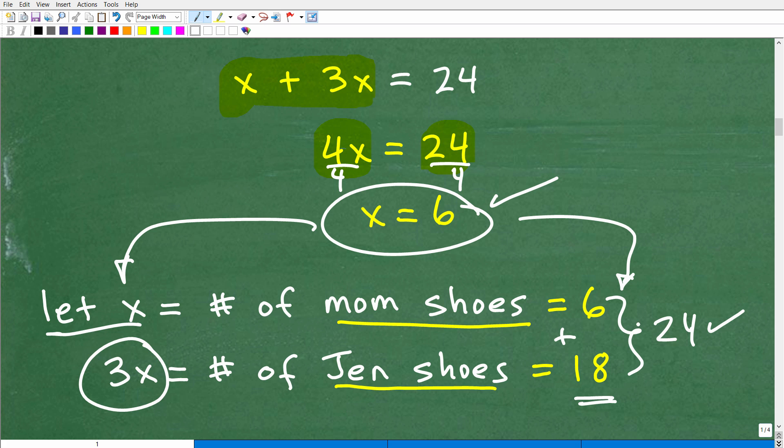And a lot of you maybe kind of worked around, you know, played around with some integer values, because you can't have 1.7 shoes, right? So you're going to be playing around. Maybe you said, okay, well, if the mother had 4 shoes and Jen has 3 times as many, so that's 4 times 3, that's 12. And then you got 16, that's not 24. And then maybe you kind of just played around with 5. That's 15 shoes for Jen, that's 20.